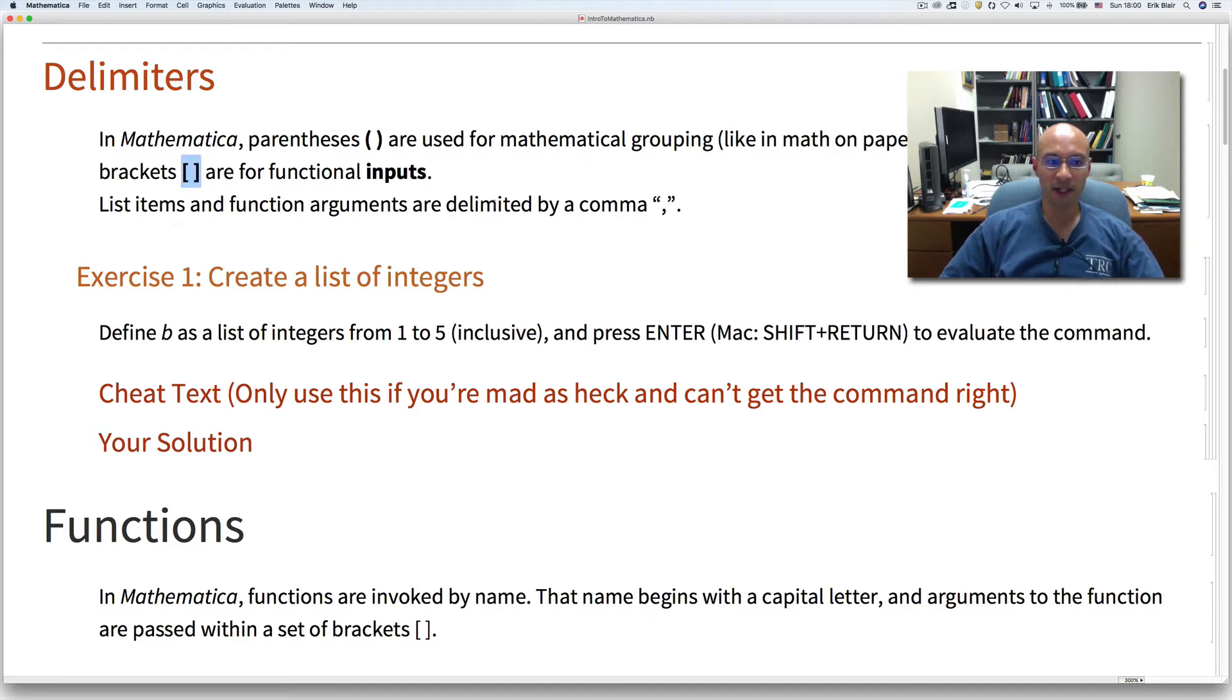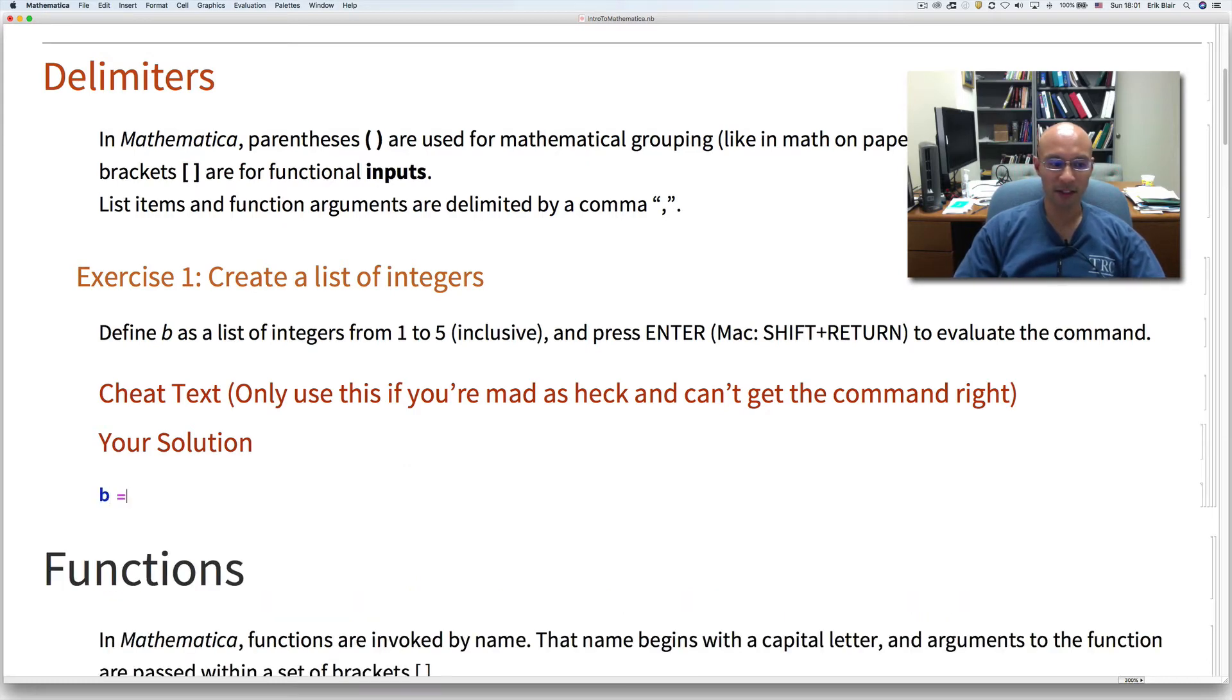And then we separate list items and function arguments by commas. So our first exercise here is to define b as a list of integers from 1 to 5 inclusive. And so I'll do that here in the solution. So I click and I type b and the equals sign is the assignment operator.